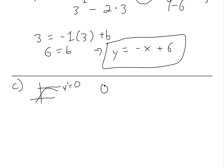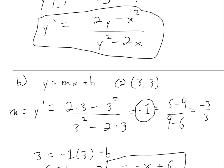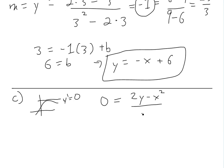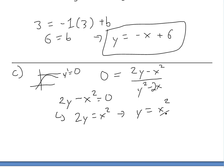So the first step: we set y prime equal to 0, and plug our derivative in. So we get (2y minus x squared) over (y squared minus 2x) equals 0. We can cancel out the denominator — this is only 0 when the numerator is 0 — so when 2y equals x squared, or solving for y, we get y equals x squared over 2.